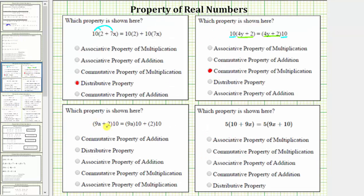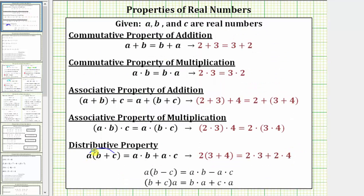Next we have the quantity 9a plus 2 times 10 equals 9a times 10 plus 2 times 10. Notice on the right side, both terms inside the parentheses are being multiplied by 10. This is also the distributive property — here we are distributing from the right, whereas in the previous example we distributed from the left. Distributing from the right can be expressed as the quantity b plus c times a equals b times a plus c times a.